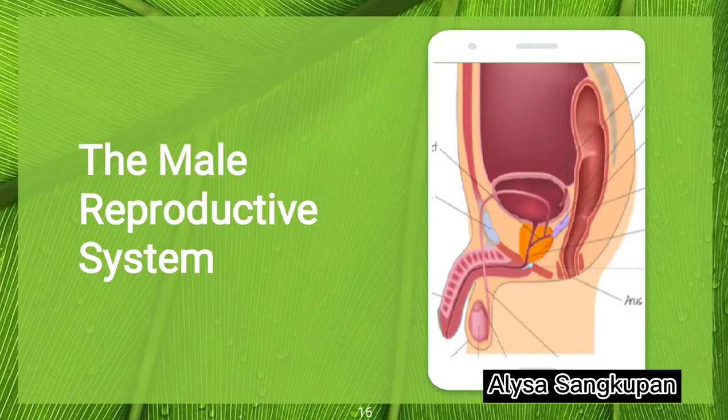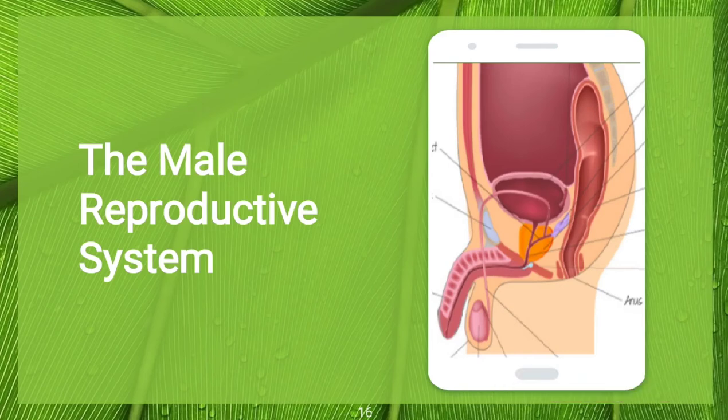We have male and female reproductive systems. So first, the male reproductive system. It consists of a number of sex organs that play a role in the process of human reproduction. These organs are located on the outside of the body. Here are the parts of the male reproductive system.